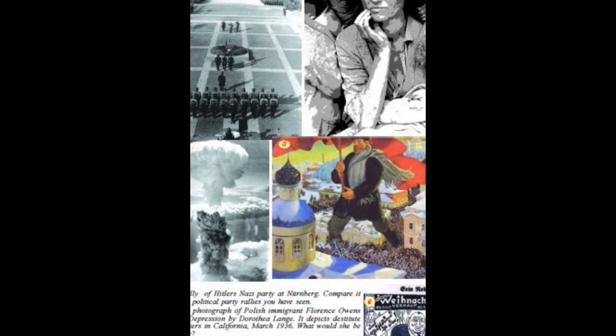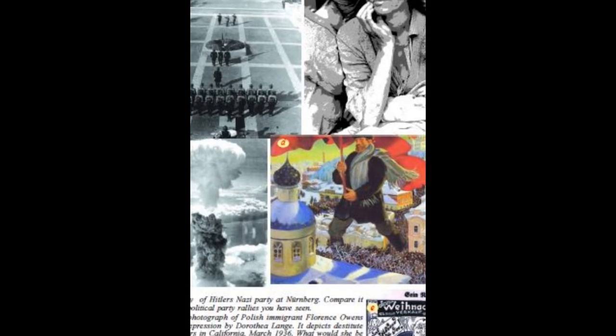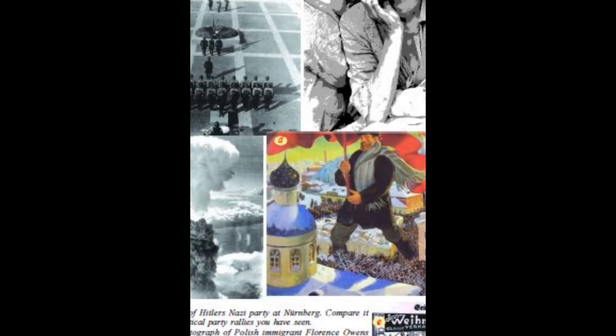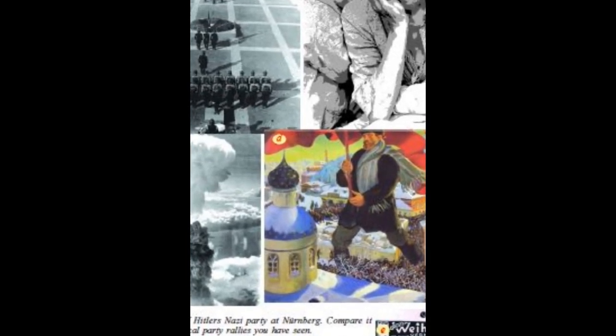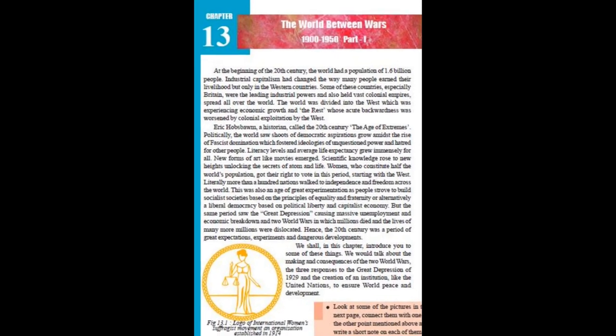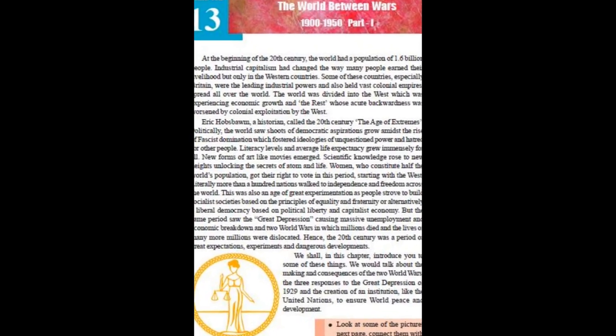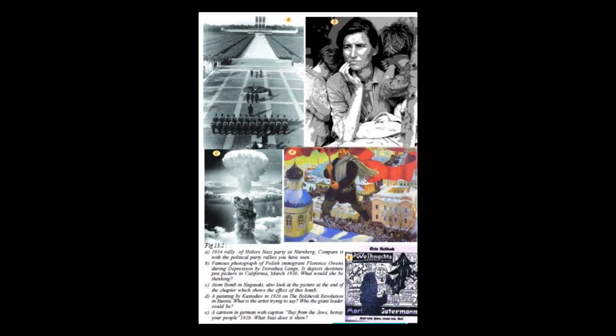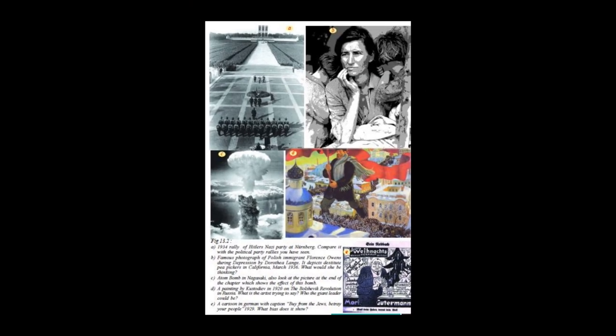Women constituted half of the world population and they worked a lot. In 1918, women got the right to vote. This was also part of the Age of Extremes, where a lot of experiments had been taking place between 1900 to 1950.